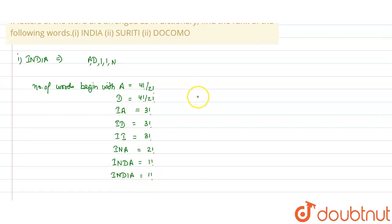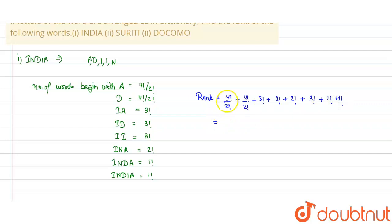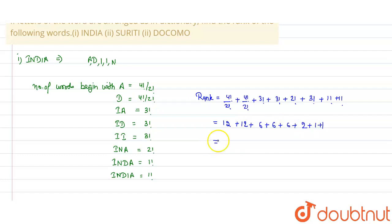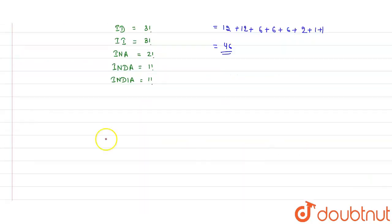So the rank of INDIA is: 4!/2! + 4!/2! + 3! + 3! + 3! + 2! + 1! + 1! = 12 + 12 + 6 + 6 + 6 + 2 + 1 + 1 = 46. The rank of INDIA is 46.